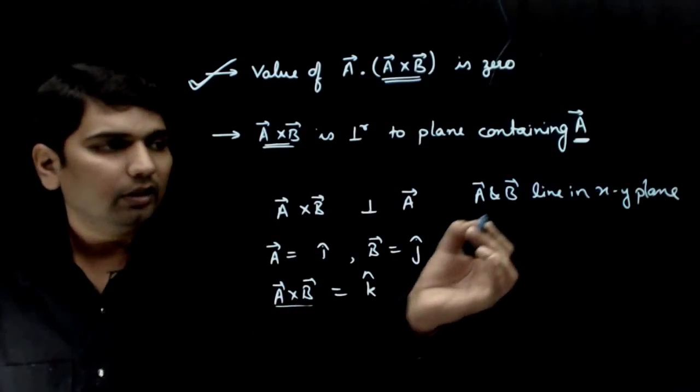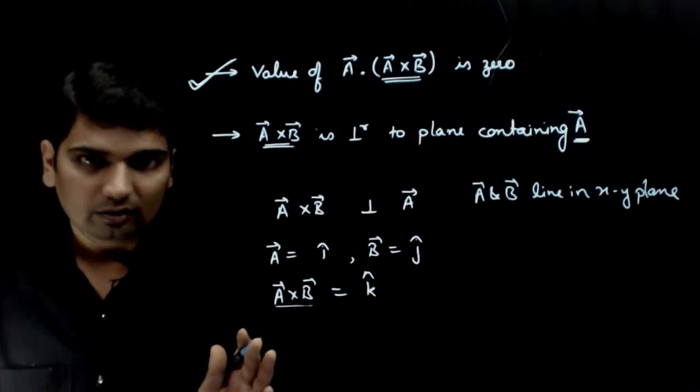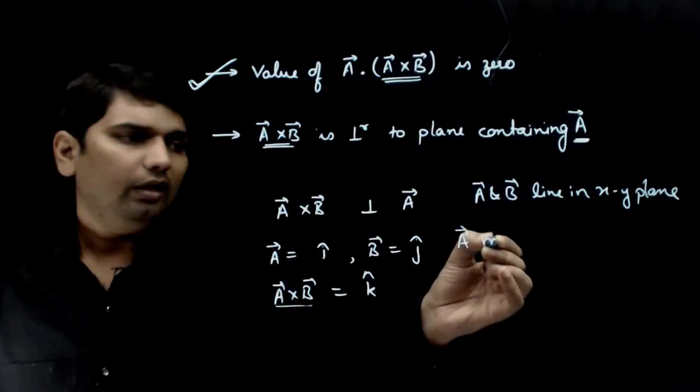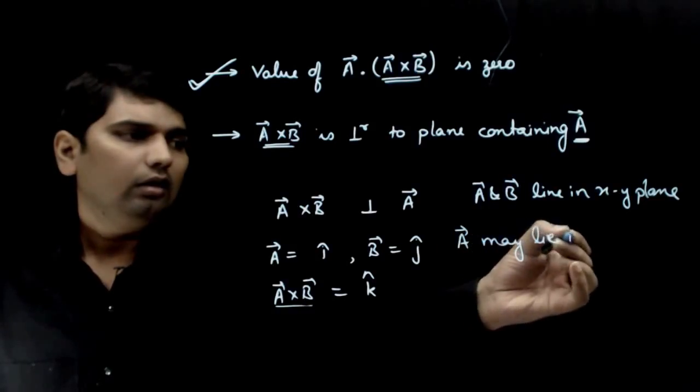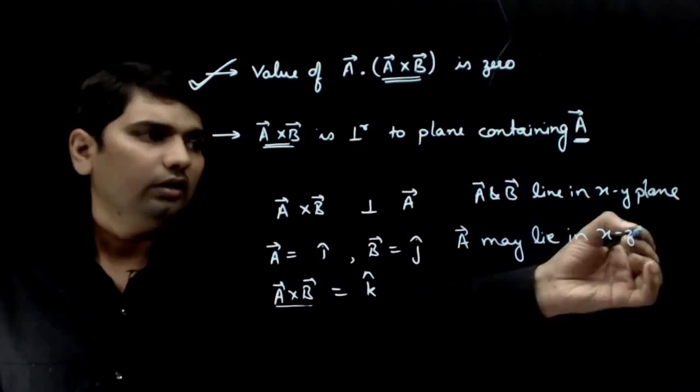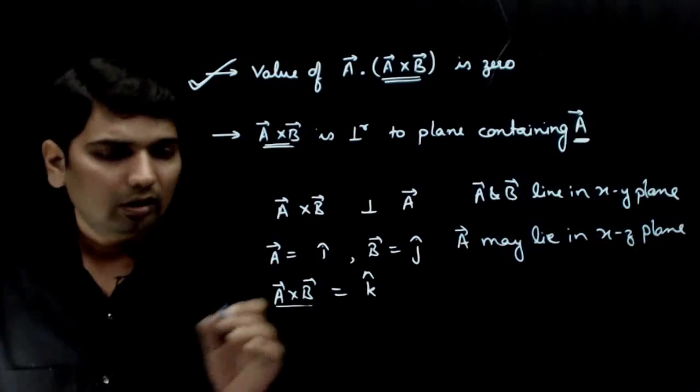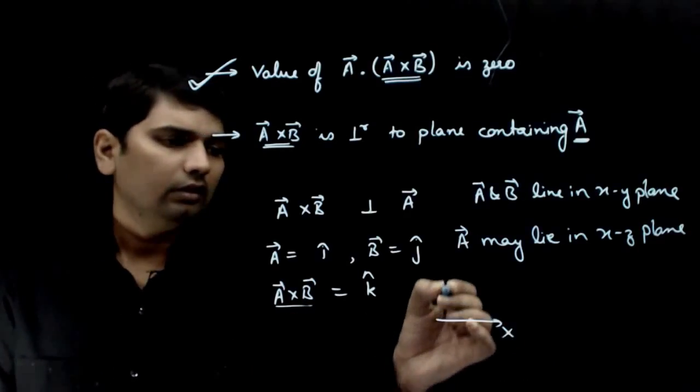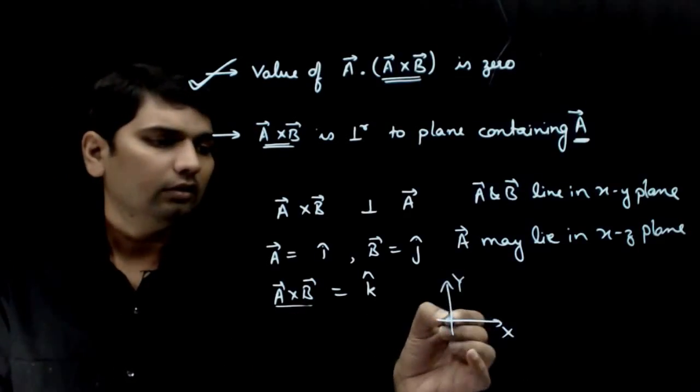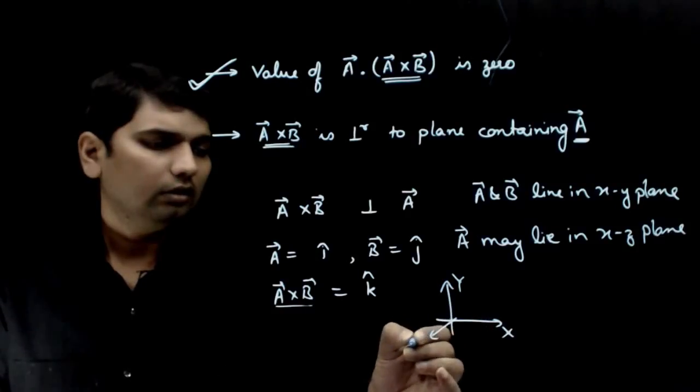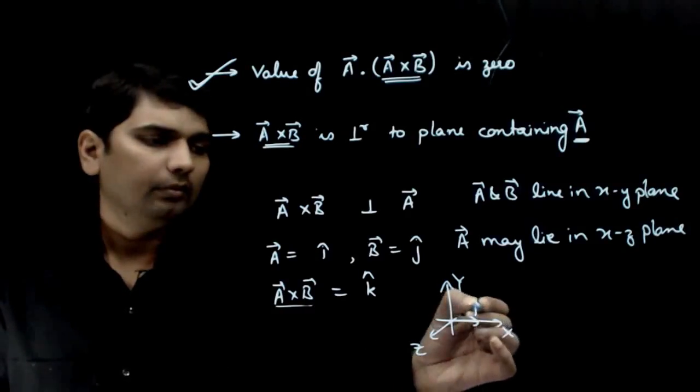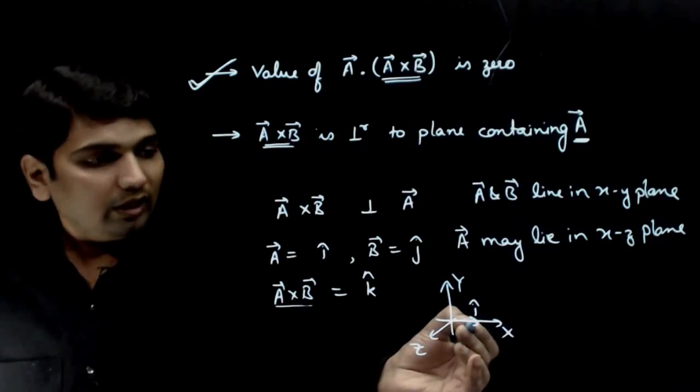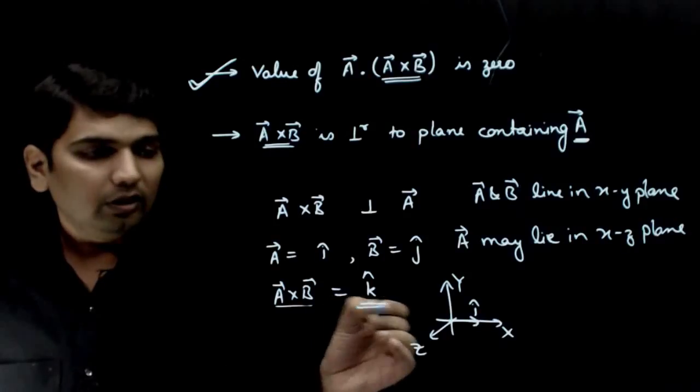A vector and B vector lie in XY plane, and because A cross B is in Z direction, it is perpendicular to this plane. That's fine. But A vector may lie in XZ plane as well. A vector lies on X axis, and XZ plane also contains the X axis. Is A cross B perpendicular to this plane? No!